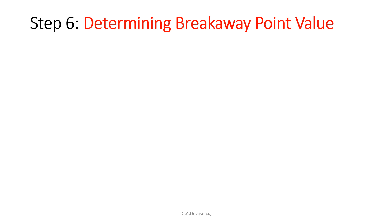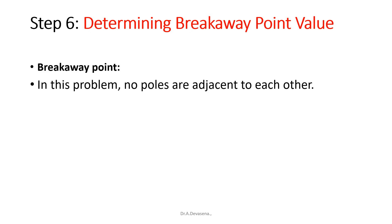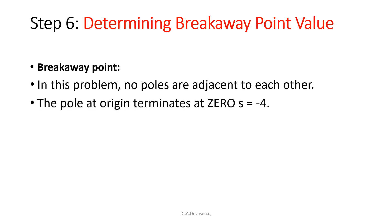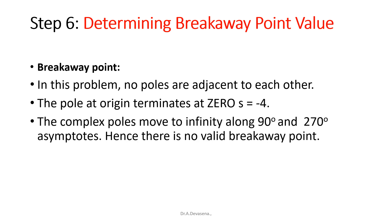Now we are going to determine the breakaway point. In this problem no poles are adjacent to each other. The pole at the origin terminates at the zero at s = -4, and the complex poles move to infinity along the 90° and 270° asymptotes. Hence there is no valid breakaway point, and the root locus does not intersect the real axis.